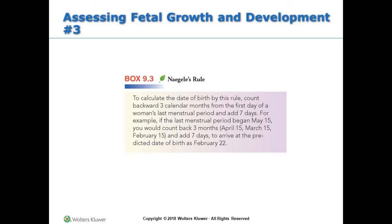In assessing the estimated date of confinement or delivery, a specific formula is used to calculate the date of birth. By Naegele's rule, count backward three calendar months from the first day of a woman's last menstrual period and add seven days. For example, if the last menstrual period began May 15, count back three months — April 15, March 15, February 15 — then add seven days to arrive at the predicted date of birth: February 22.